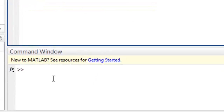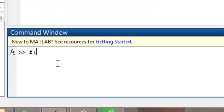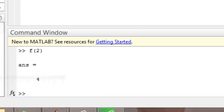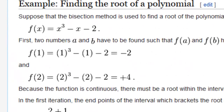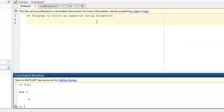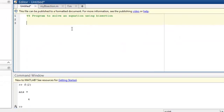So just to see if this works, we'll pass f(2) and we get some answer. Should it be 4? So it should be 8 minus 2 minus 2 — that is 4. And hence we get 4. So this works.